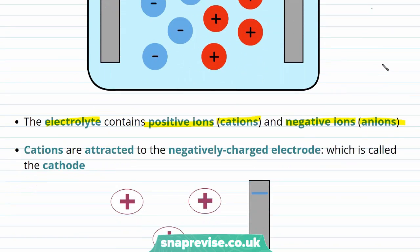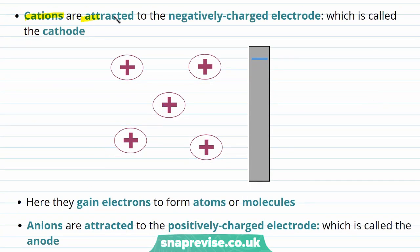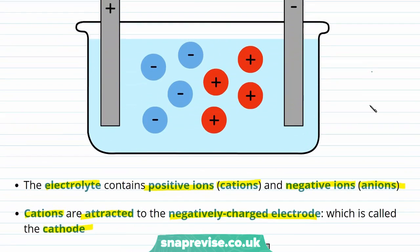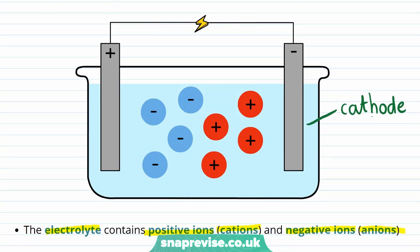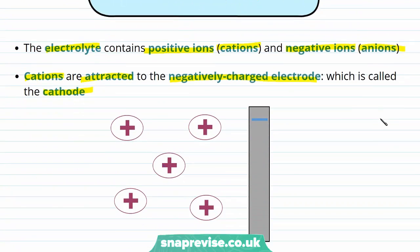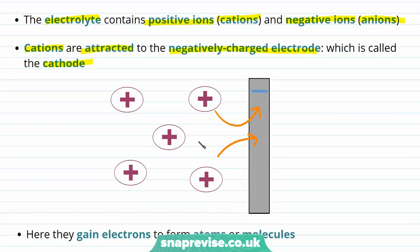The positively charged ions, which are the cations, are attracted to the negatively charged electrode. We call the electrode which positively charged cations are attracted to the cathode. So in our overall diagram, we can label our negatively charged electrode as the cathode. This electrode will have a negative charge because of an excess of electrons. Therefore, when these positively charged ions are attracted towards the negatively charged electrode, they are able to gain electrons from the electrode in order to form atoms or molecules.